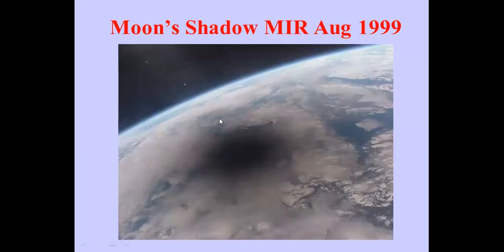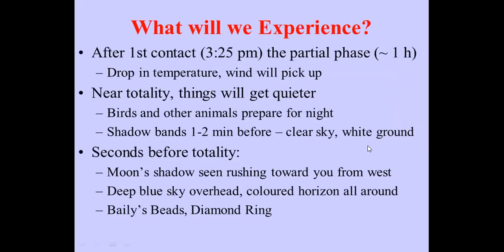Here's an image of the moon's shadow taken from the Mir space station in 1999. It's not very big compared to Earth. The shadow moves at roughly one to two kilometers per second across the surface. These times may vary a couple of minutes across the province — I calculated these for around Heartland, so they may be a couple of minutes later in Miramichi.